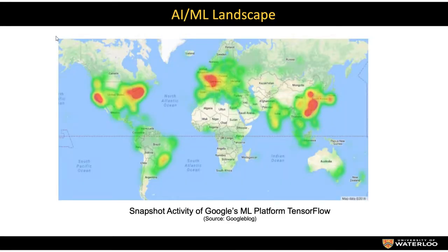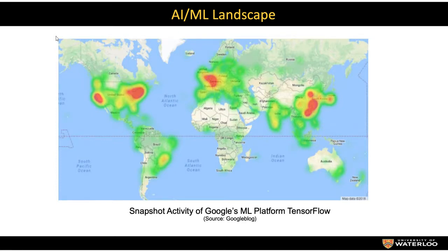This is the world landscape of AI and machine learning activity, a snapshot taken one or two years ago showing the major activities around the world in the field of utilizing the TensorFlow platform, one of the major platforms people are using to develop libraries and applications using deep learning systems. You can see activity in Southeast Asia, Europe and North America, South America, Australia, and other parts of the world.